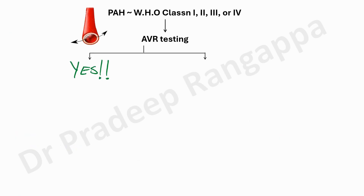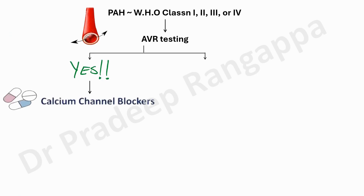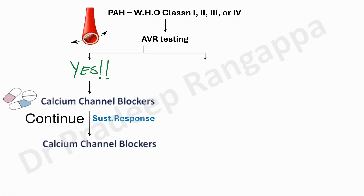As intensivists, we would not be dealing with OPD patients for acute vasodilator response testing — cardiologists, PAH clinics, or pulmonologists should do this. If the answer is yes and there is a vasodilator response, the suggestion is to use calcium channel blockers, titrated to effect. If there is a good sustained response to calcium channel blockers, the suggestion is to continue them. This is the algorithm for approach to pulmonary artery hypertension.